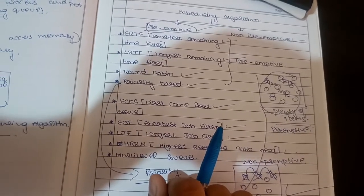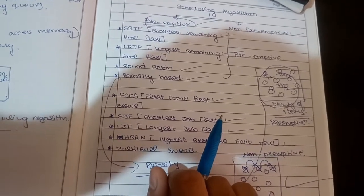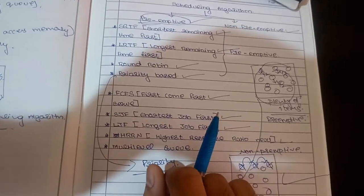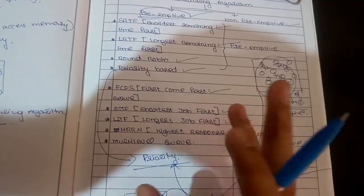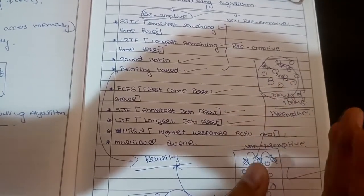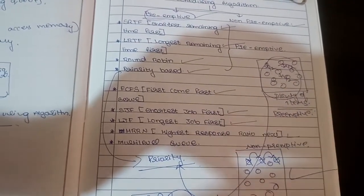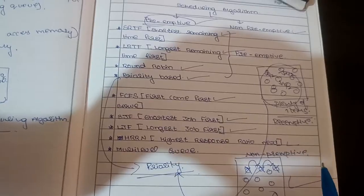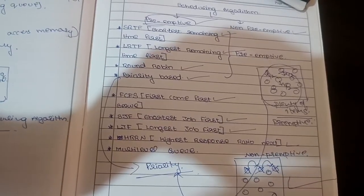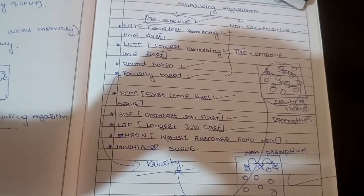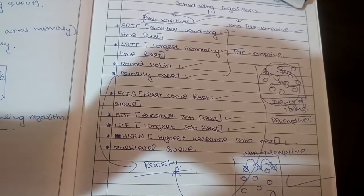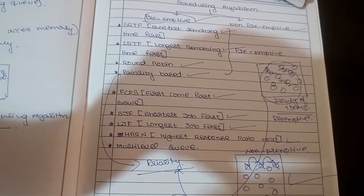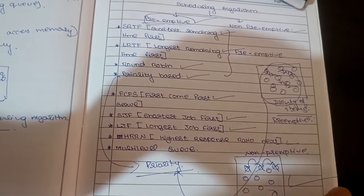If you have a doubt, that is non-preemptive — you wait. If there is a preemptive advantage, there is responsiveness — a higher-priority process can interrupt the current one.